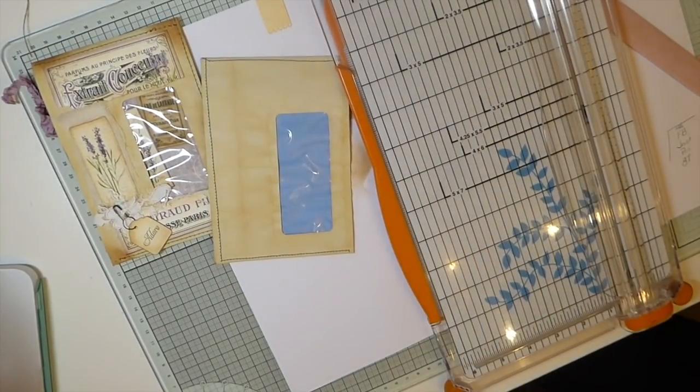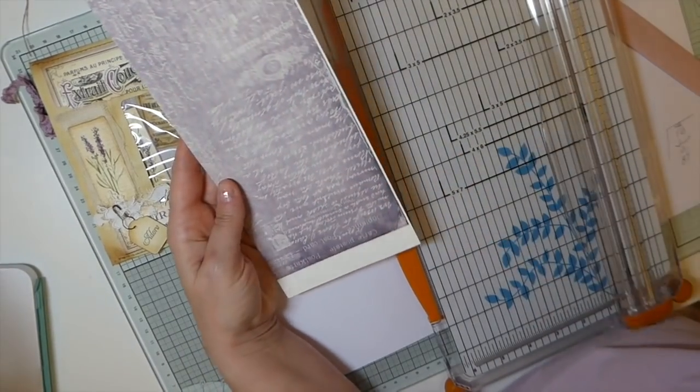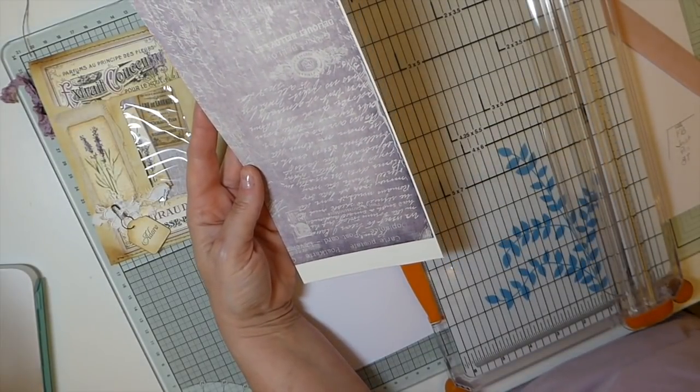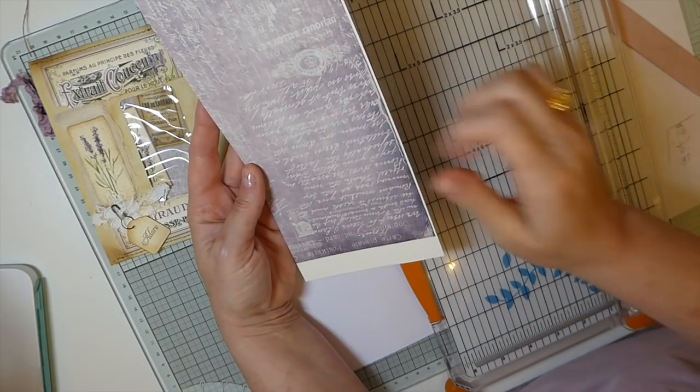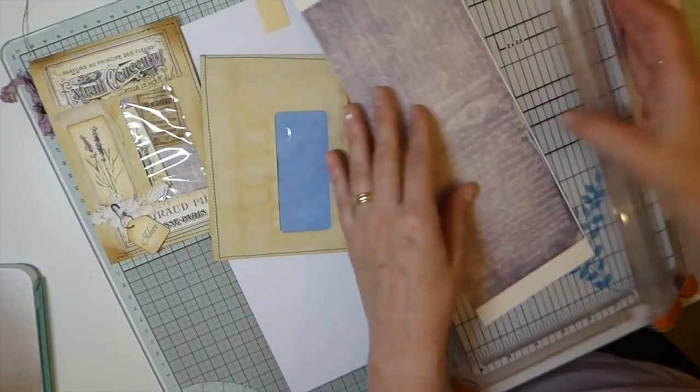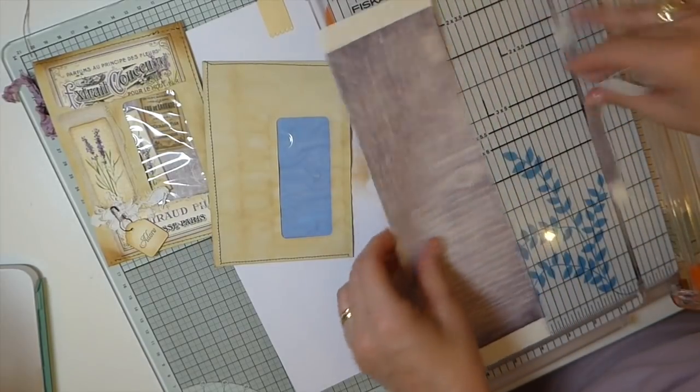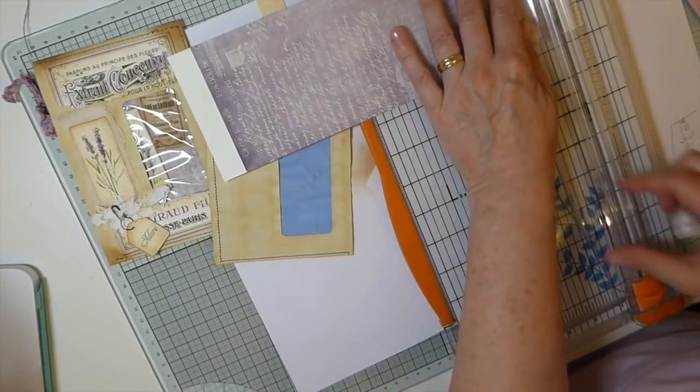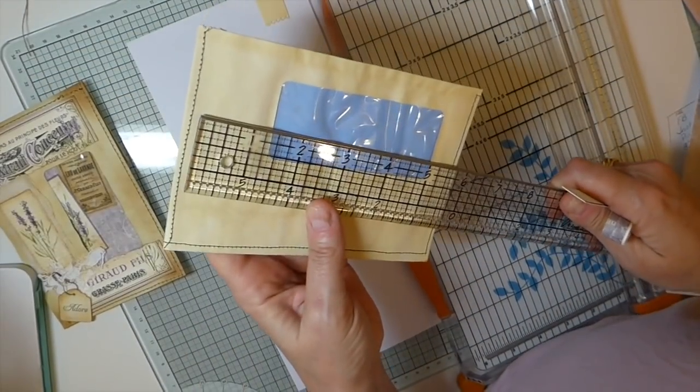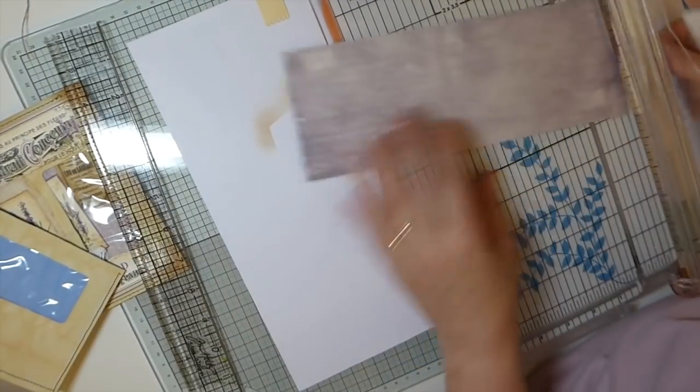Alright, so what I did here guys, this is a background paper that you get from my porch prints with the envelope clutch bag. And so I printed it onto cardstock that way I can make a journal card out of it. So let me just trim this down. Oh gosh, what did I say? Five and a half, I think I can squeeze five and a half into that.